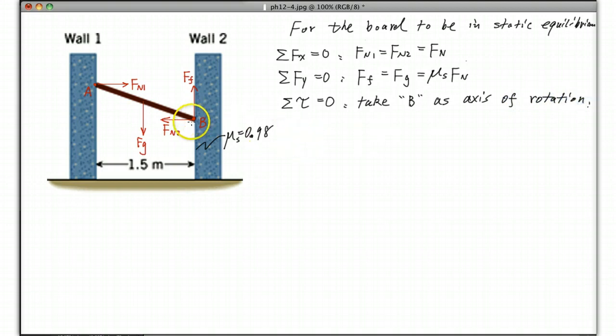Since there's more forces acting at B, take B as axis of rotation. And then these two forces are still there, but they are not creating any torque if you take that as axis of rotation. Then look at the direction of torque created by each force.